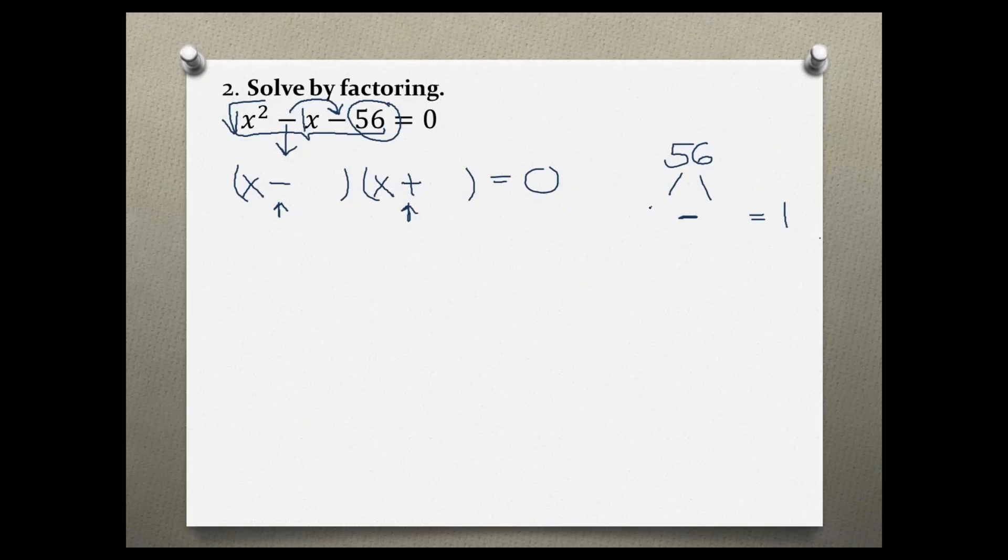So the factors of 56 I would subtract to give me 1 are 8 times 7, because 8 minus 7 is 1 and 8 times 7 is 56. So the larger of the two numbers, of the two factors, goes first, and the smaller one second.